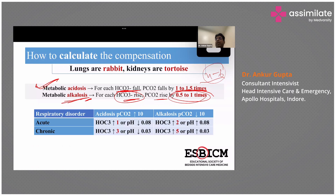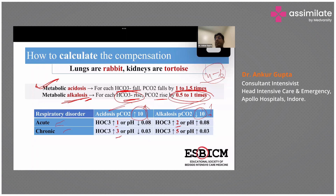For respiratory disorders, you can make a chart for acidosis and alkalosis, acute and chronic. For every 10 change in PCO2 (in either direction): if acute, there is a 1 change in bicarb; if chronic, there is a 3 change in bicarb. For alkalosis, for every 10 change, it's either a 2 or 5 change in bicarb. You can take a screenshot of this for reference.